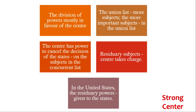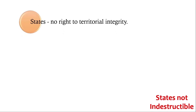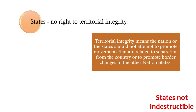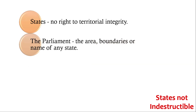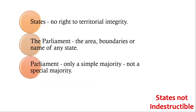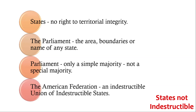In the United States, the residuary powers are given to the States. The second feature is States Not Indestructible. The States in India have no right to territorial integrity. The Parliament alone can change the area, boundaries, or names of any states, and for doing so, Parliament requires only a simple majority and not a special majority. Because of this, the Indian Federation is known as an Indestructible Union of Destructible States, whereas the American Federation is described as an Indestructible Union of Indestructible States.